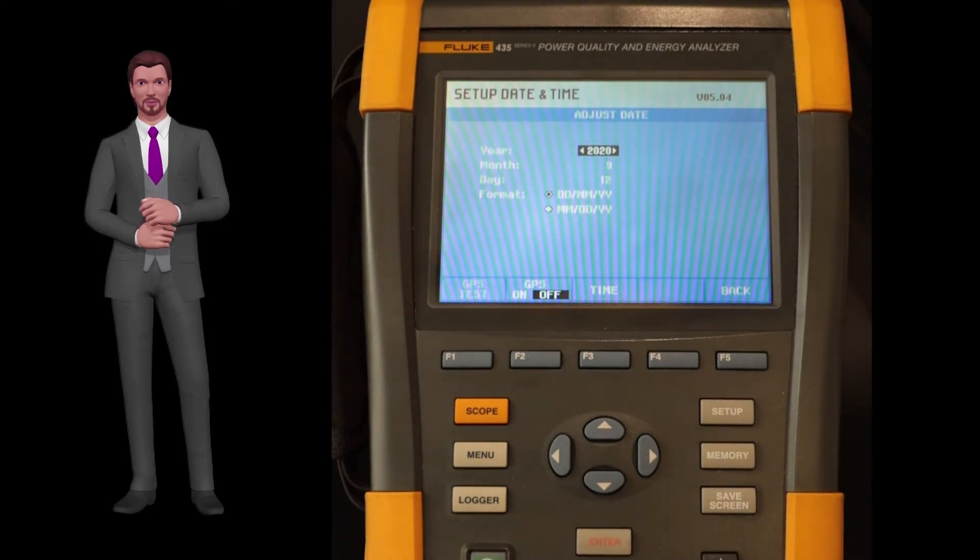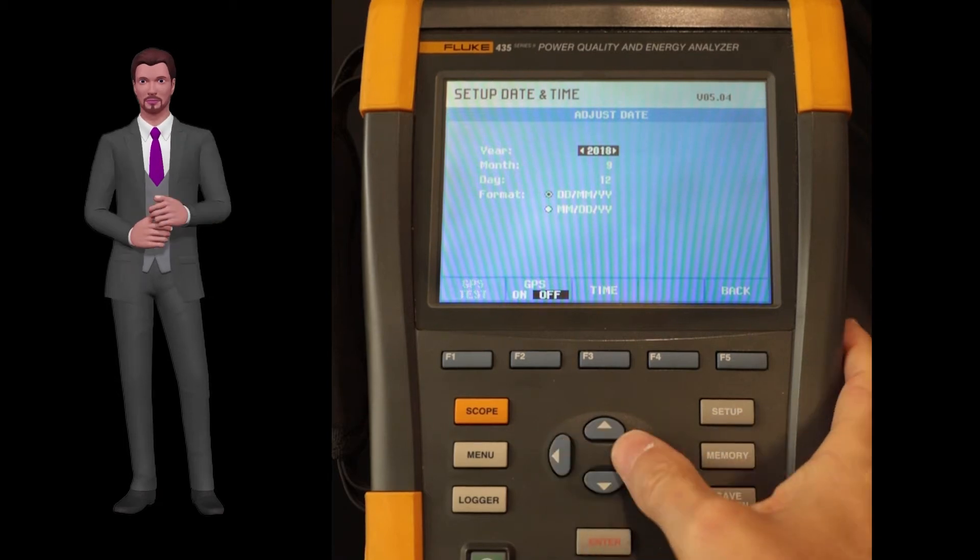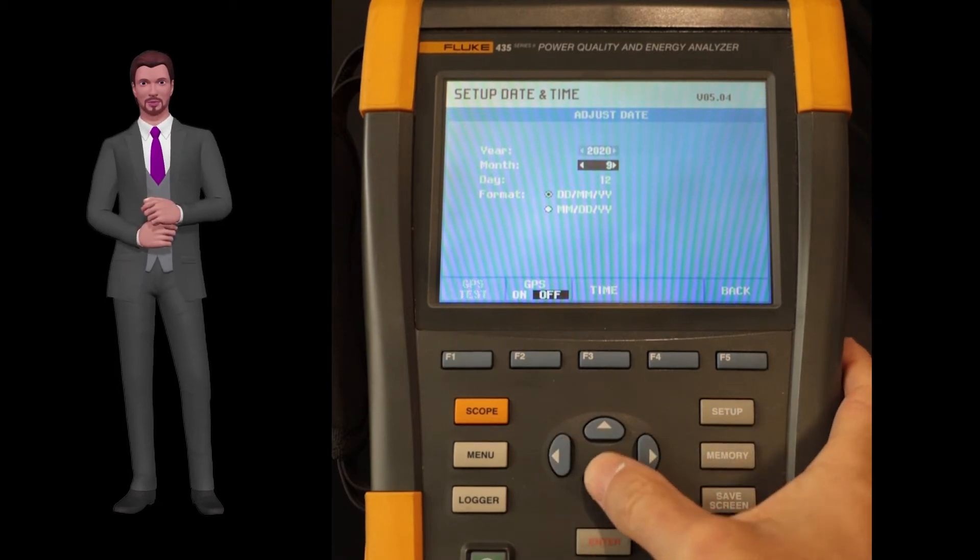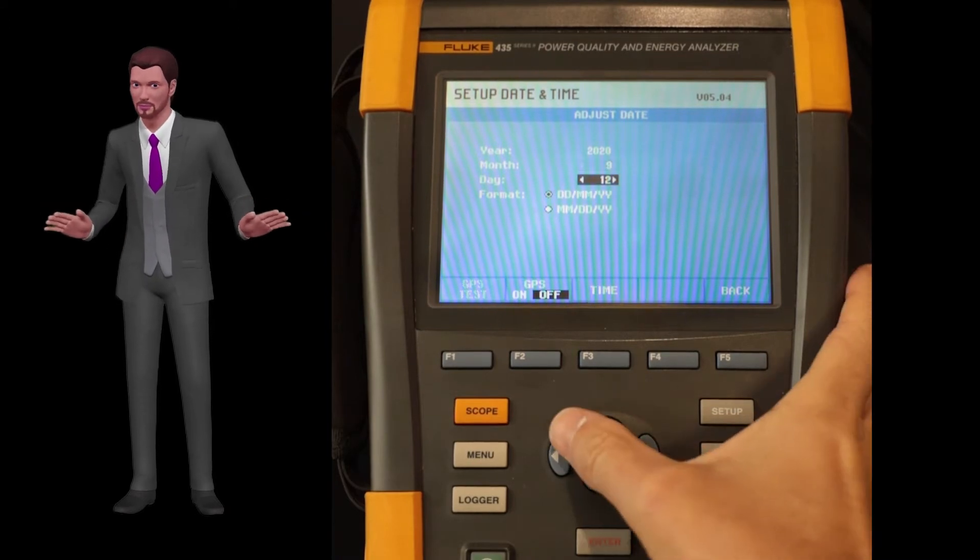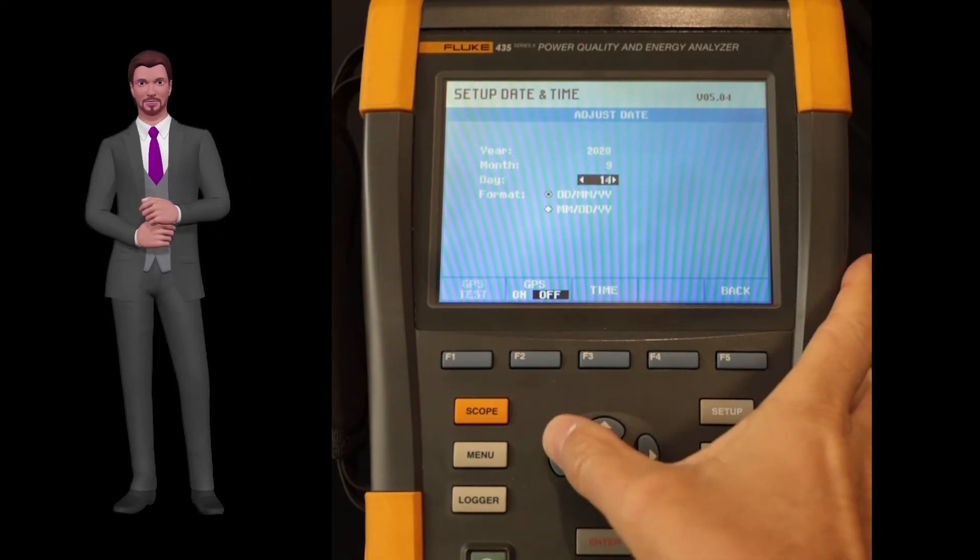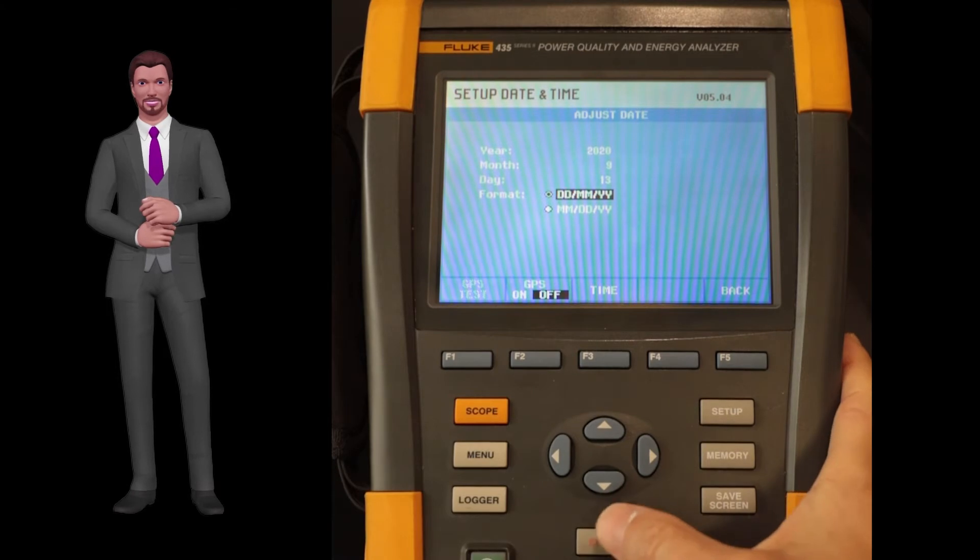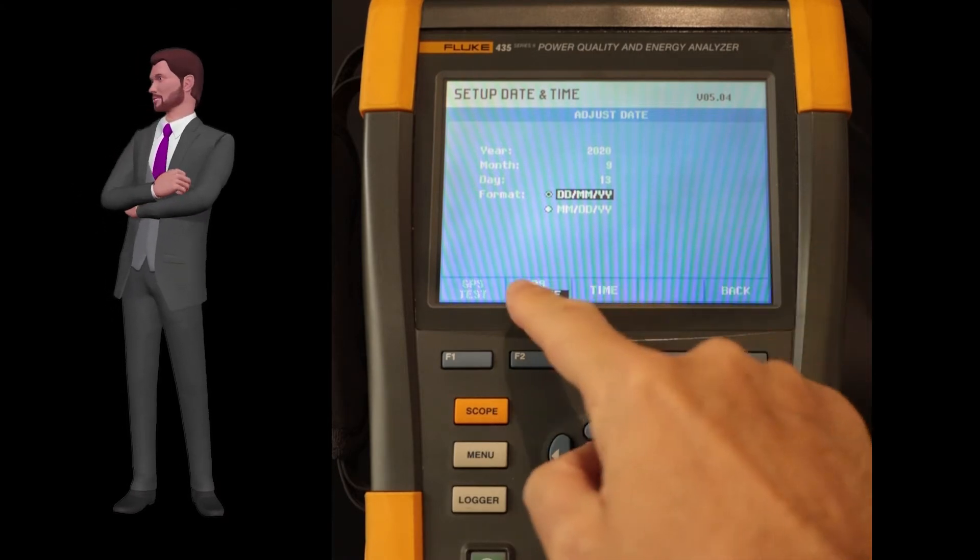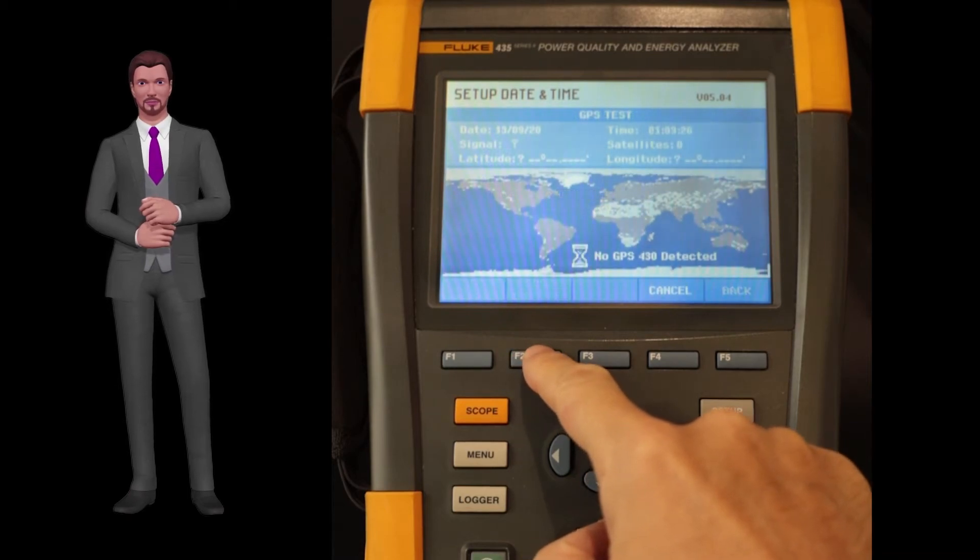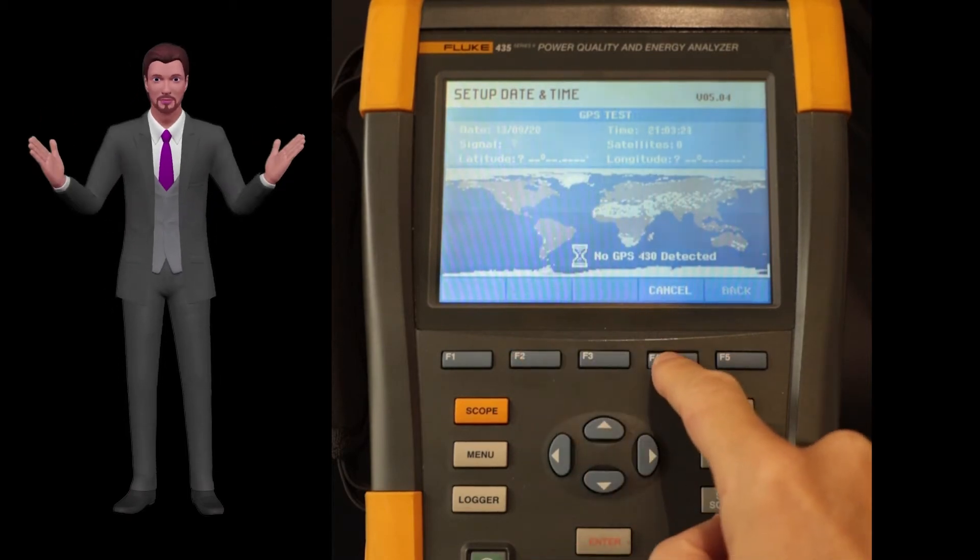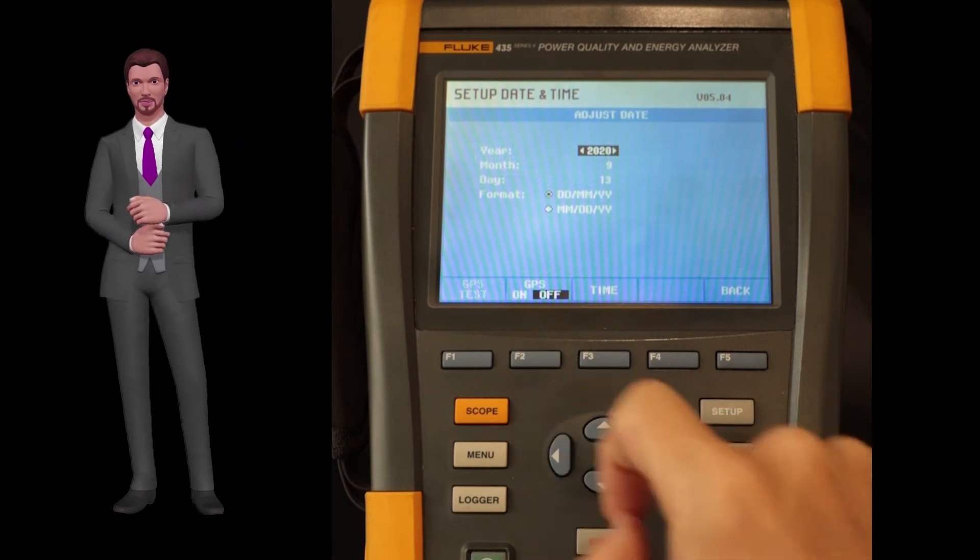Now you can adjust the year, month, day and date format. To do this, scroll vertically with the up and down arrows and change the value with the left and right arrows. For the date format, go to the one you liked the most and hit enter. If you have connected the GPS option to the device, you can activate the time synchronization with the F2 key. In this way the device will update its date and time automatically with the time signal available through the GPS.